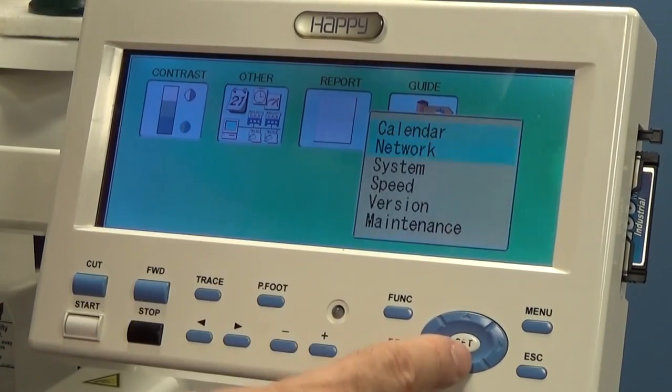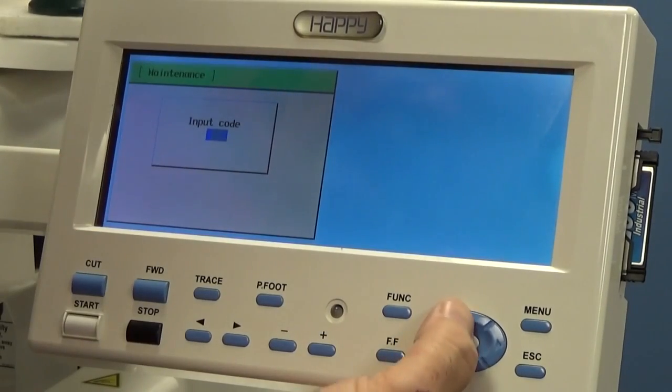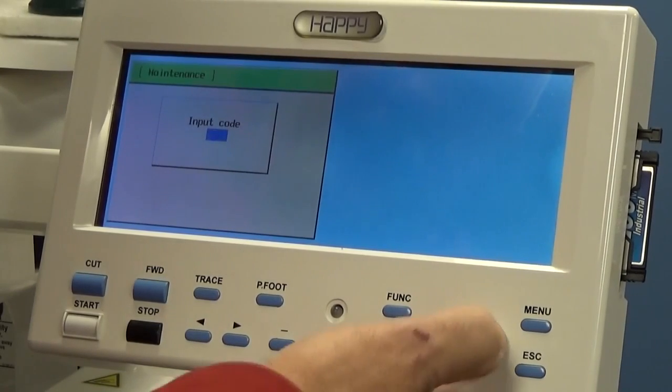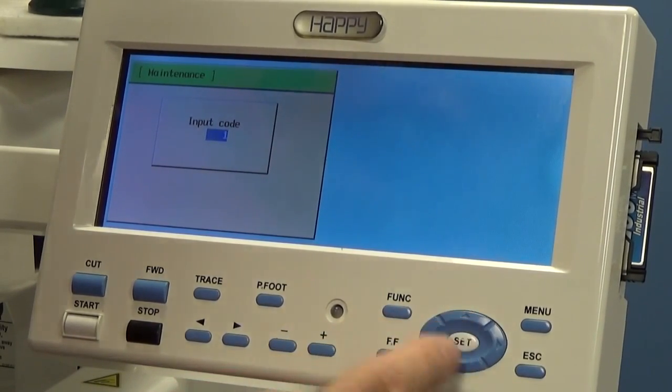You'll go down to other. Press set. You're going to find maintenance. Set. We've got to put our code back in here again. 2251. Use your up arrow key. Right. Up arrow key. Right. Up to five. Right. Up to one. Press set.